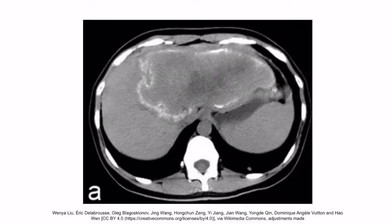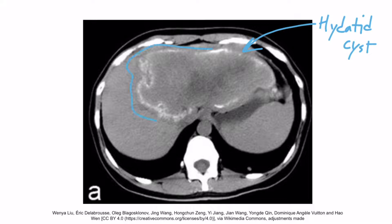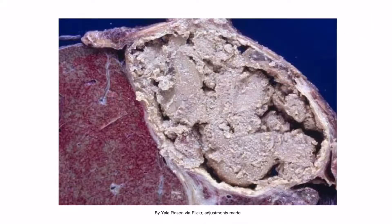Here's a CT scan showing a hydatid cyst within the liver. These can grow and look like a tumor — that's a huge cyst. On the outside, you can see this eggshell calcification, and seeing that should tip you off that this is a hydatid cyst, not a tumor. Here's an image of a hydatid cyst from Echinococcus granulosus — humongous — and you can see the outer calcified edge giving it that eggshell calcification appearance on imaging.